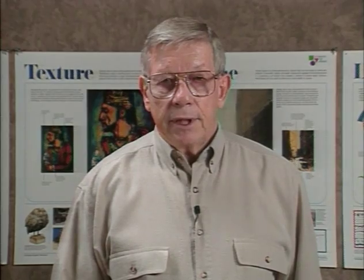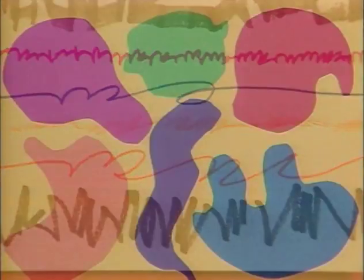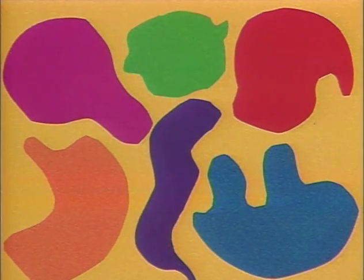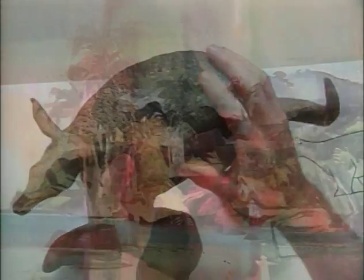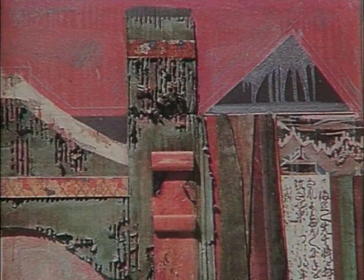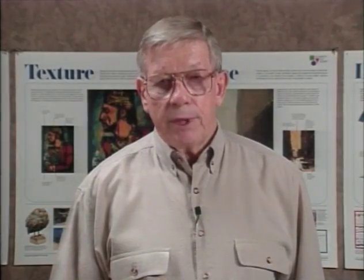There are seven of these elements, and they are line, shape, form, color, value, texture, and space. We will learn what these are by working with several projects and how artists can use them in their work, or how you can use them in your own work.